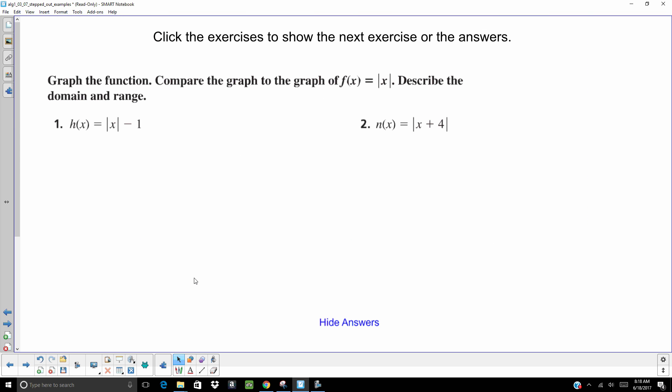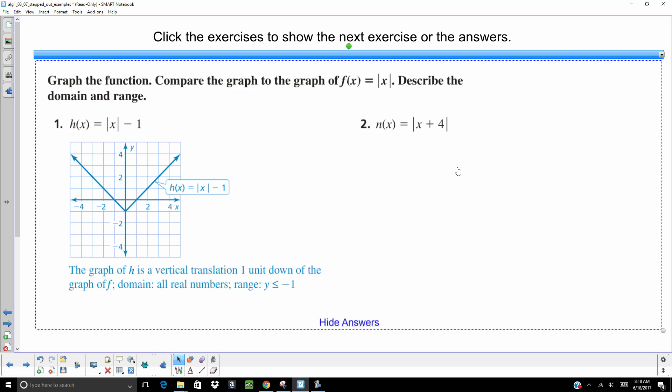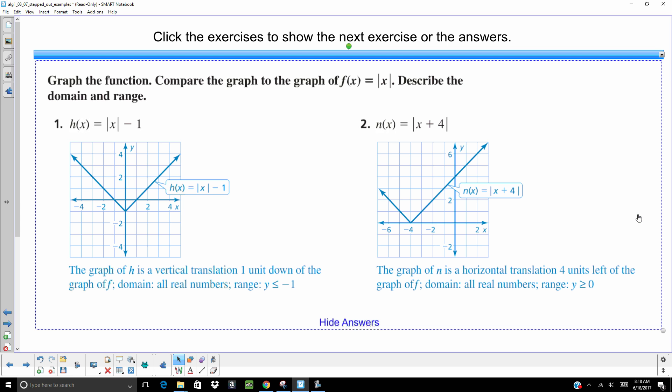Take a second, graph these, hit pause when you think you have the graph, hit play and check your answers. So on number one, it looks like it shifted down one. On number two, it shifted to the left four. Are you starting to see any bits of pattern? If it's outside that absolute value, I'm thinking that it's shifting it up or down. If it's inside that absolute value, it's shifting it right or left.